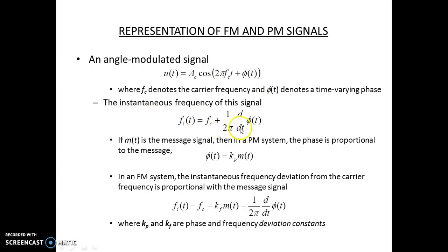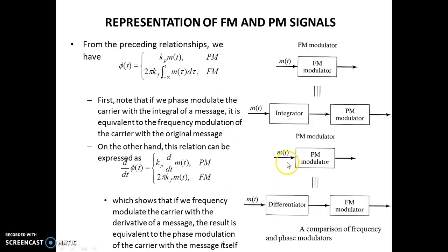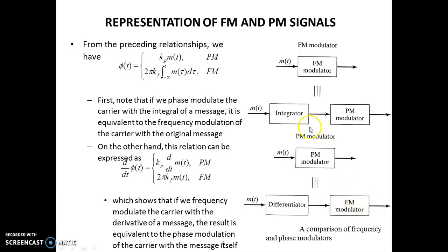From the relationship between frequency and phase, we see that K_P represents the phase sensitivity of the phase modulator, and K_F represents the frequency sensitivity of the frequency modulator. FM can be obtained from a PM modulator, and a PM modulator can be obtained from FM modulation.